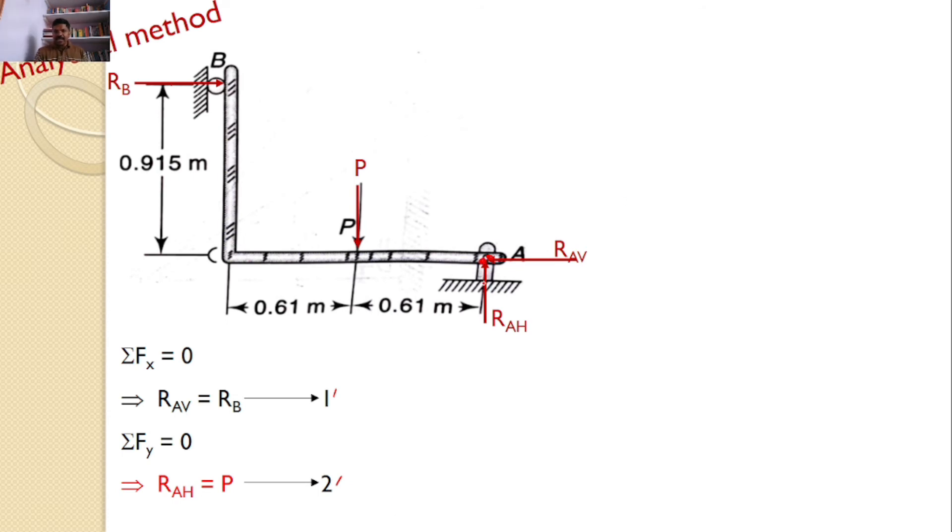Now, let us take moments about point A. Rah and Rav both pass through point A and will not introduce any moment. P will introduce a counterclockwise moment and Rb will introduce a clockwise moment. The line of action of P is at a perpendicular distance of 0.61, and the line of action of Rb is at a distance of 0.915.